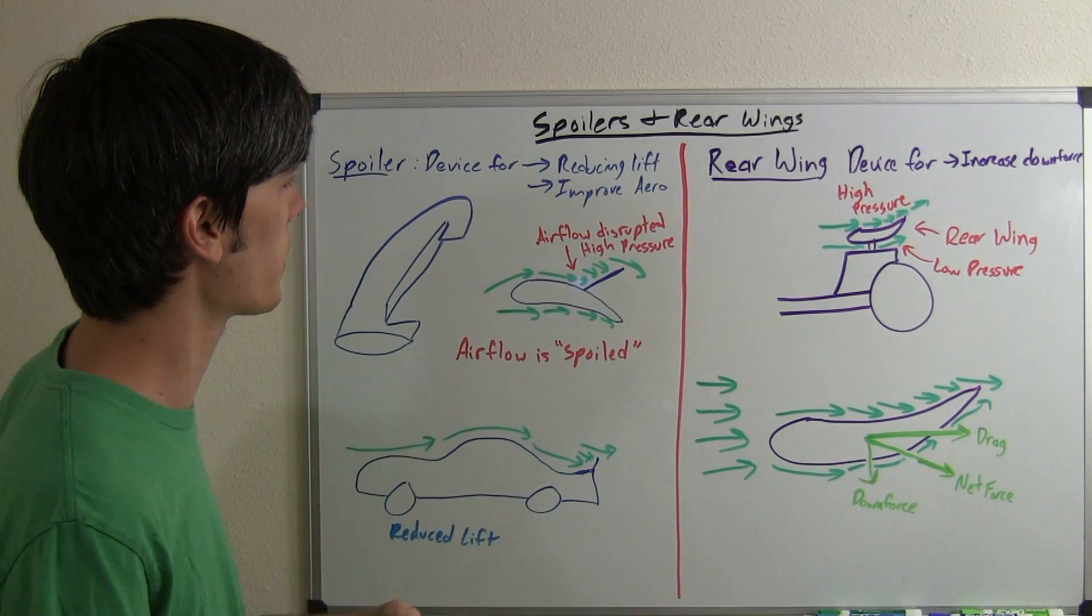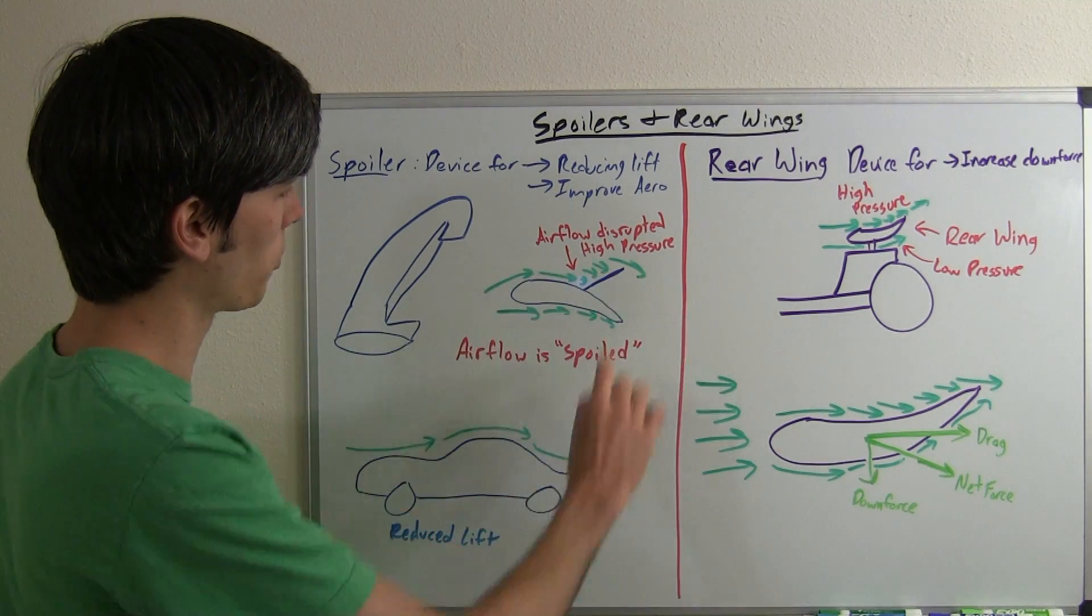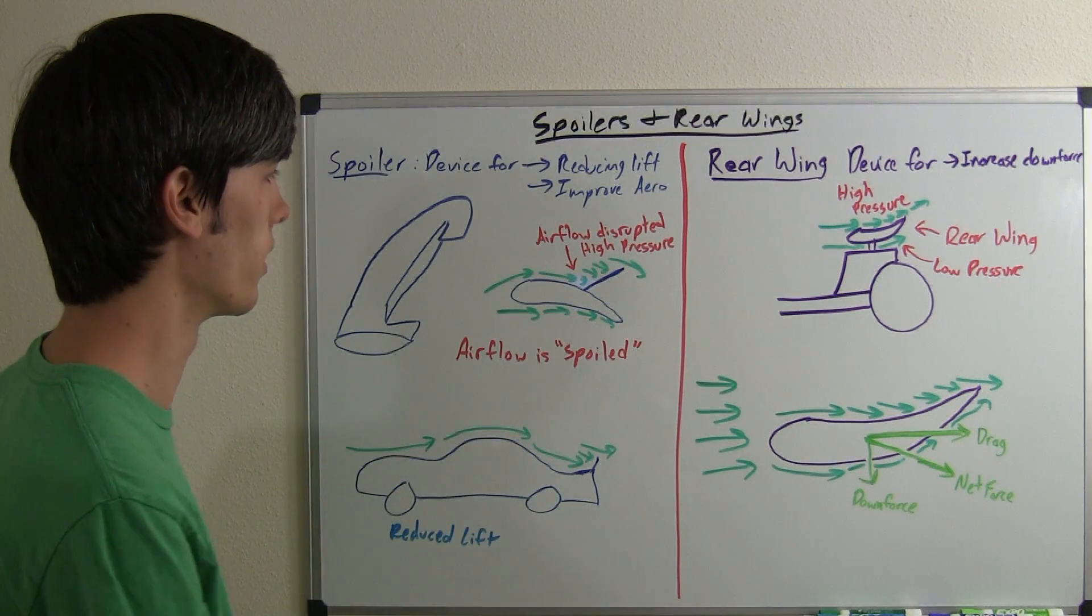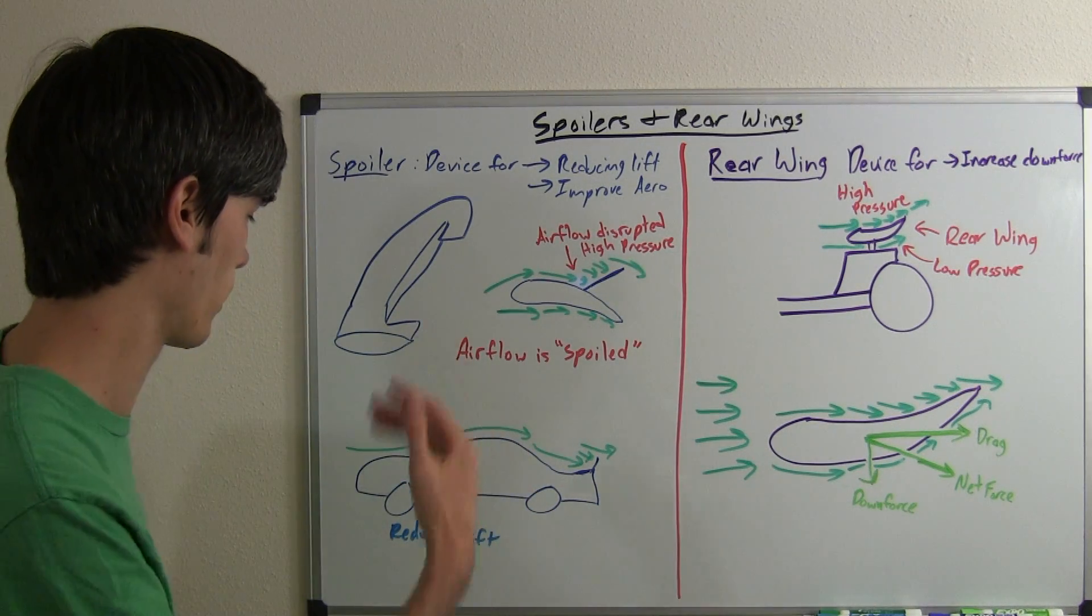Now this spoiler flaps up and it disturbs that pressure differential we've got going on. And now we have a high pressure up on the top and we're spoiling that airflow. And so what's going to happen is the plane is going to go down instead of having lift and going up.